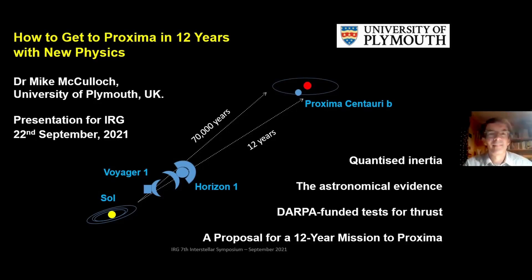Dr. McCulloch, it's yours, take it away. Thanks, I'm glad to be here. I'm going to talk about how I think we can get to Proxima Centauri in about 12 years with new physics. As has been said before, Voyager 1, our fastest probe, maybe except for New Horizons, is going to take about 70,000 years to get to Proxima Centauri.